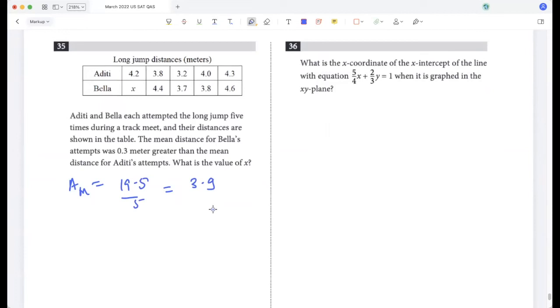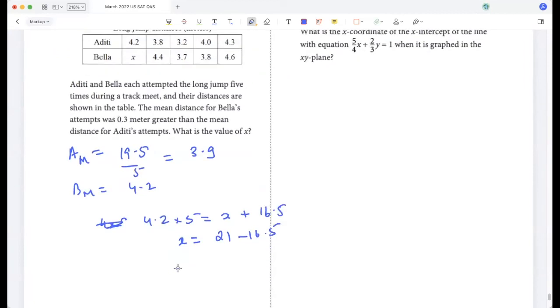Aditi and Bella each attempted the long jump five times during a track meet and their distances are shown in the table. The mean distance for Bella's attempts was 0.3 meters greater than the mean distance for Aditi's. What is the value of x? Let's first find the mean for Aditi. Aditi's mean would be four and three, seven and three, ten and four, fourteen and four, eighteen and one, 19.5. That's 19.5 divided by 5, so that's 3.9. Bella was 0.3 greater than Aditi, so Bella's mean would be 4.2. So the total for 4.2 times five should be x plus four and three, seven and three, ten and four, fourteen and fifteen, 16.5. So x would be 21 minus 16.5, which is 4.5.